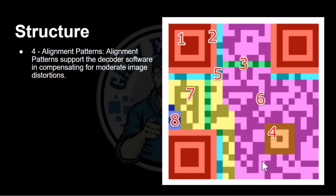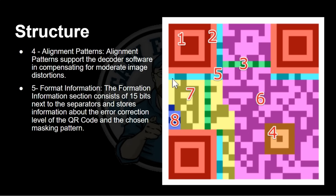Number four, down in the middle, is the alignment pattern. This is separate from the finder patterns and helps the decoder software work out exactly how the image is oriented, particularly if there is some skew or rotation. It's especially important in larger QR codes — in fact, Version 1 doesn't even have it. Version 2 and upwards have that extra square, which helps compensate for moderate image distortions.